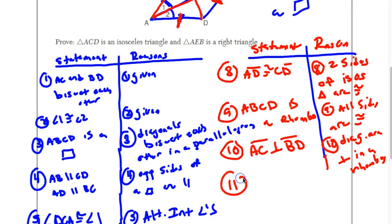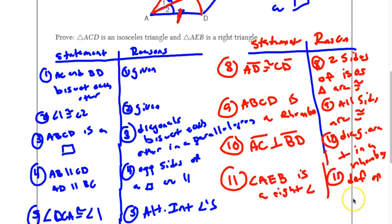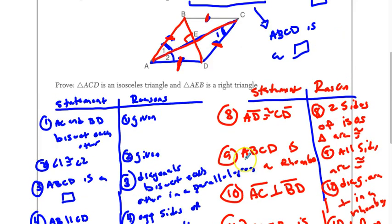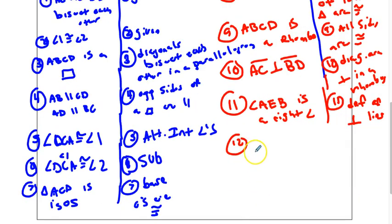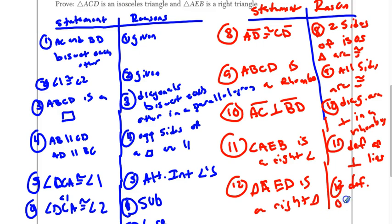Step 11: Angle AEB is a right angle — that's the definition of perpendicular lines. And then step 12, finally, I can state that triangle AEB is a right triangle. And that's the definition of right triangles.